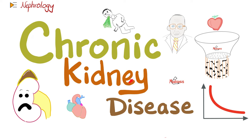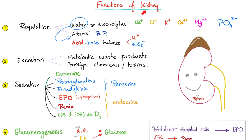When it comes to chronic renal failure or chronic kidney disease, the most common causes include diabetes and hypertension. Never ever forget that. Normal functions of the kidney are many. It regulates your acid-base balance and gets rid of waste products like urea and creatinine. It also makes EPO, which tells the bone marrow to make more red blood cells.